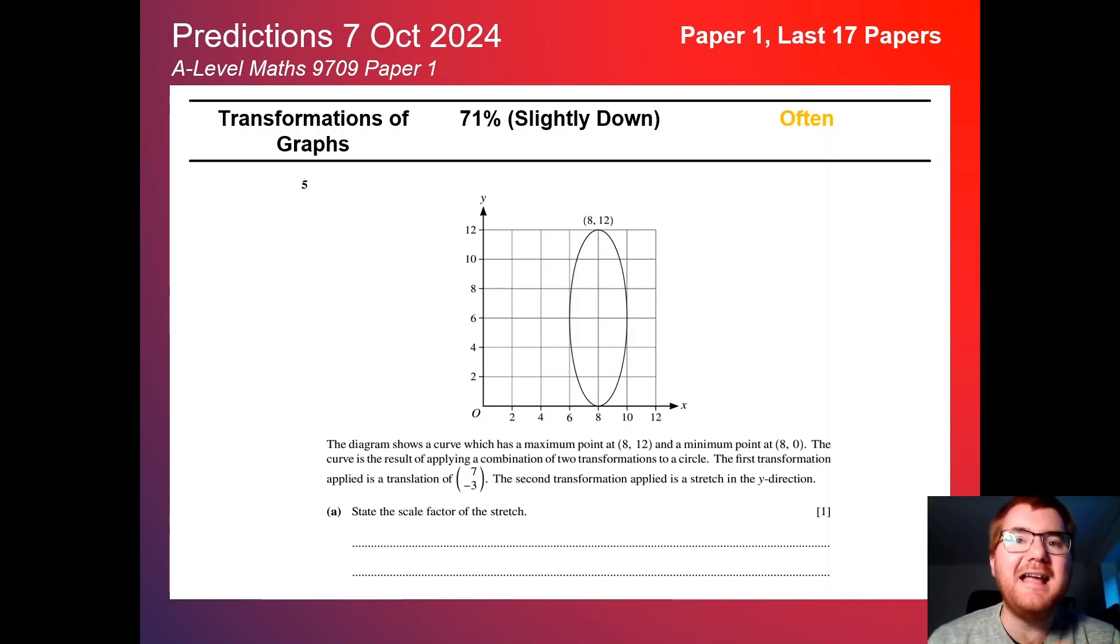Hello and welcome to another Ginger Math Petition video. Today we're going to predict the A-Level Maths 9709 Paper 1 on the 7th of October 2024, not many weeks away.